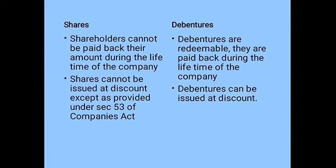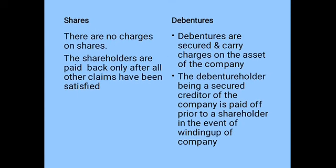Shares cannot be issued at a discount except as provided under Section 53 of the Companies Act. Issuing at a discount means issuing a share below its face value — for example, if the face value is one hundred rupees but shares are issued at ninety rupees, that is an issue at discount. Such issuance is restricted under Section 53. However, debentures can be issued at a discount when necessary to raise funds.